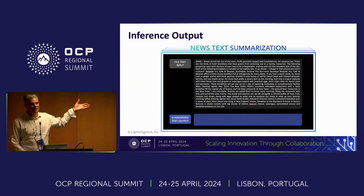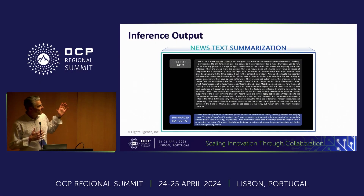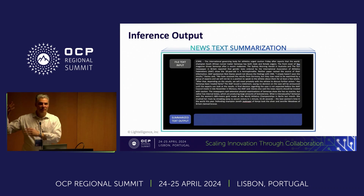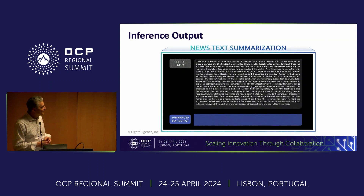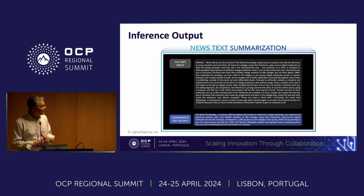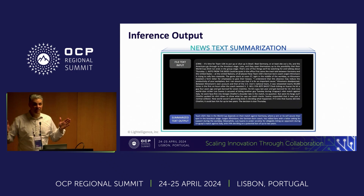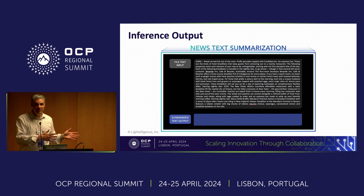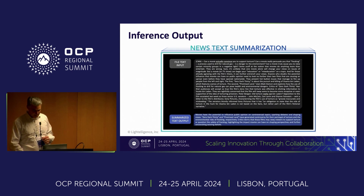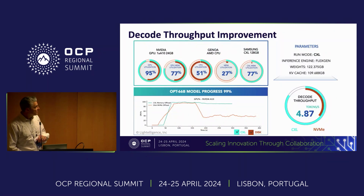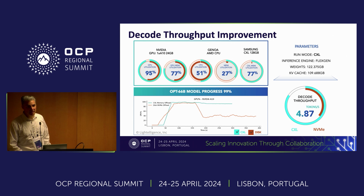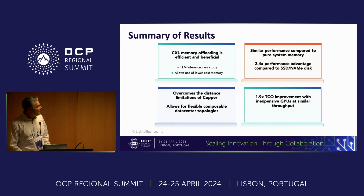The model task was news text summarization — it takes a page of news and summarizes it into a few sentences, which takes about six minutes normally. Running two and a half times faster is pretty important — six minutes down to just under three. Additional results show over time how CXL memory performed compared to NVMe.